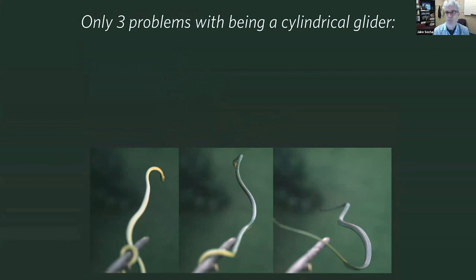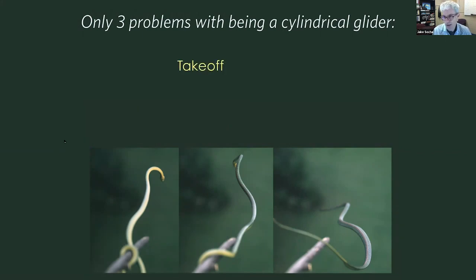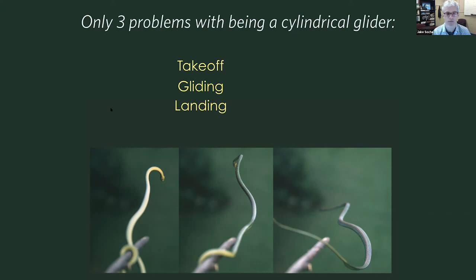I would say it's probably easy to be a glider if you're a snake and you're a cylinder — except for a few minor problems. Minor problem number one would be takeoff, and then gliding, and then landing. Aside from that, it's super easy.